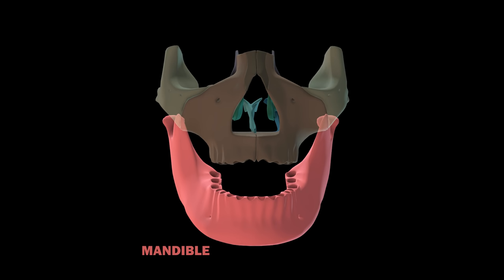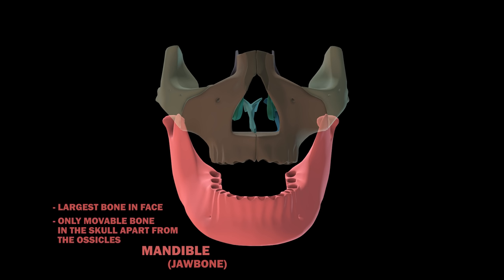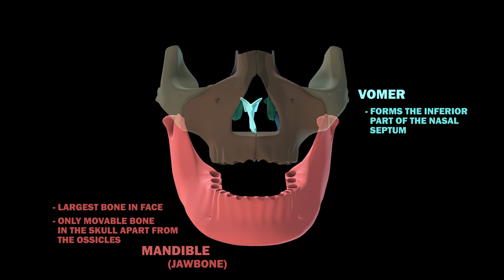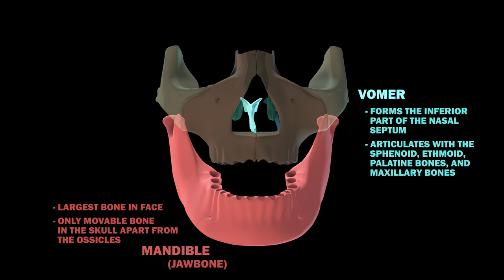The mandible is your jawbone. It is the largest bone in the human face and is the only movable bone in the skull apart from the ossicles. The other unpaired facial bone is the vomer, which forms the inferior part of the nasal septum and articulates with the sphenoid, ethmoid, palatine bones, and maxillary bones.